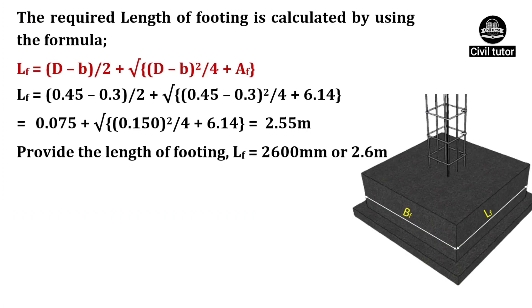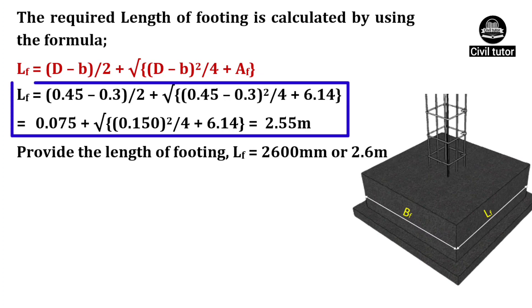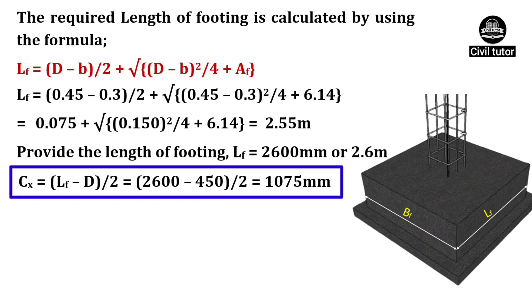The required length of footing is calculated by using the formula: LF = (D - B)/2 + √((D - B)²/4 + AF). On substituting these values, LF will be equal to 2.55 meter. Hence, provide the length of footing equal to 2600 mm or simply 2.6 meter. The projection of footing for bending about the x-axis is given by CX = (LF - D)/2. LF is already calculated as 2600 mm and D is given as 450 mm. On substituting these values, CX will be equal to 1075 mm.